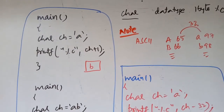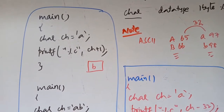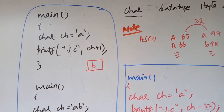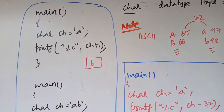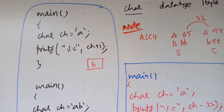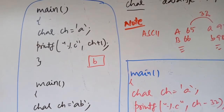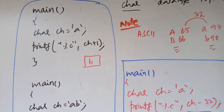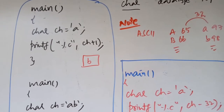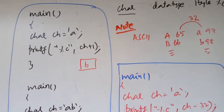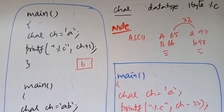Look at the first demo program. The variable ch of data type character is initialized with small 'a', and in printf it is ch plus 1. As we discussed earlier, the concept of ASCII codes means small 'a' plus 1 is small 'b'.